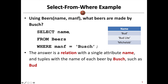Bush is a string, and we are matching the manufacturer attribute with the string 'Bush', followed by a semicolon denoting the end of the statement. By running this query, we can find all the beer names made by Bush. The returning result will be a table with one single attribute — name — because we are doing SELECT name, projecting name only. Inside it are all the beer names made by Bush, for example Bud, Bud Light, and others.